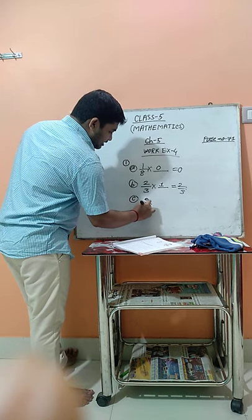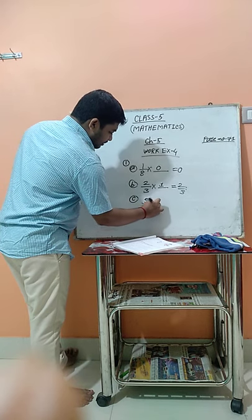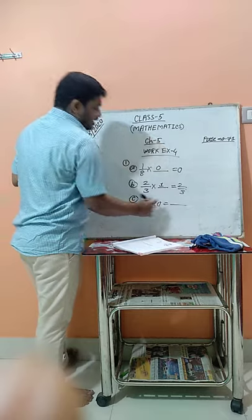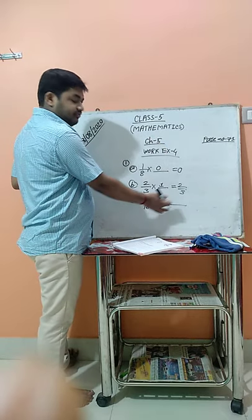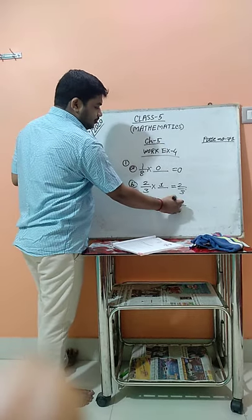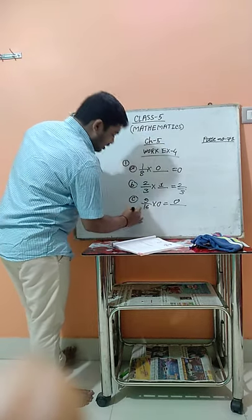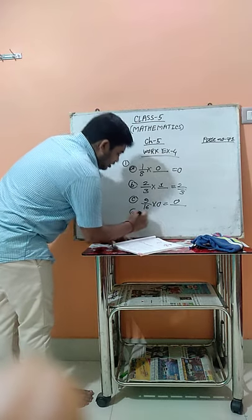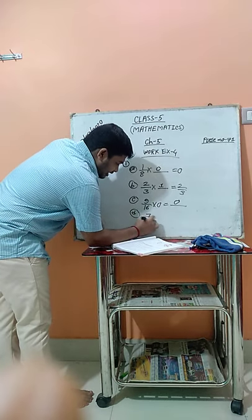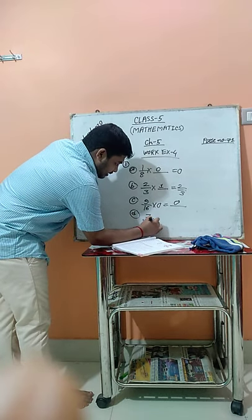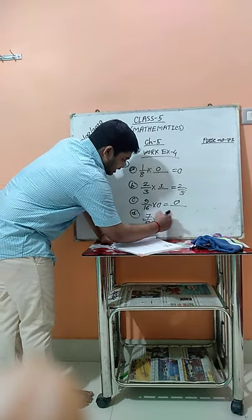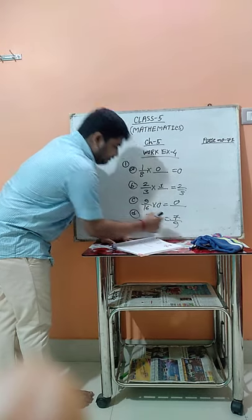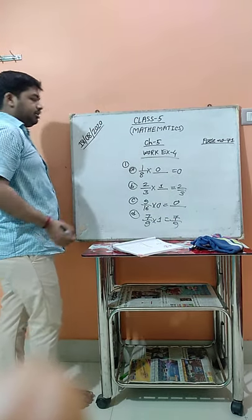Number C: 9/16 multiplied by blank equals 0. We know that any number multiplied by 0 is definitely 0. Number D: 7/9 multiplied by 1 — the answer is 7/9 only. If we multiply by 1, the answer remains the same.